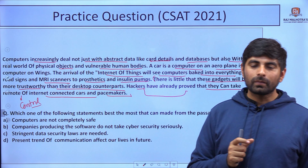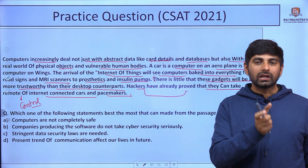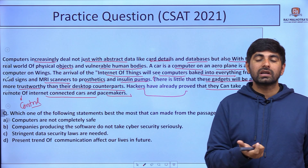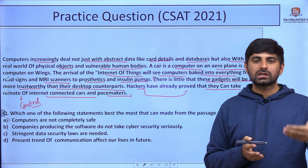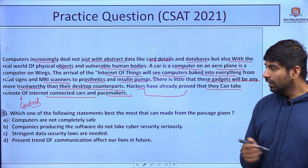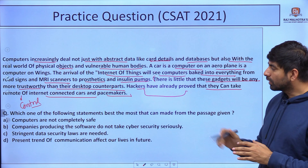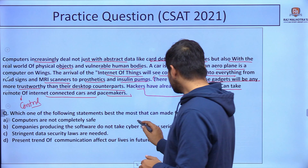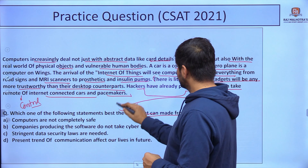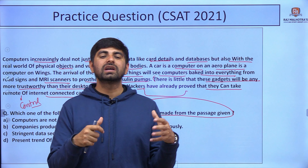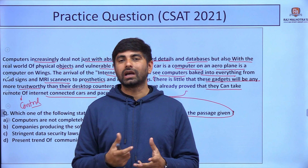The passage is talking negatively about computers — that they are not safe — and mentions specific areas where they are not safe, with multiple examples explained in various ways. Now, what type of question are they asking? 'Which one of the following statements best reflects the most that can be made from the passage given?' — so the best crux of the passage is being asked.